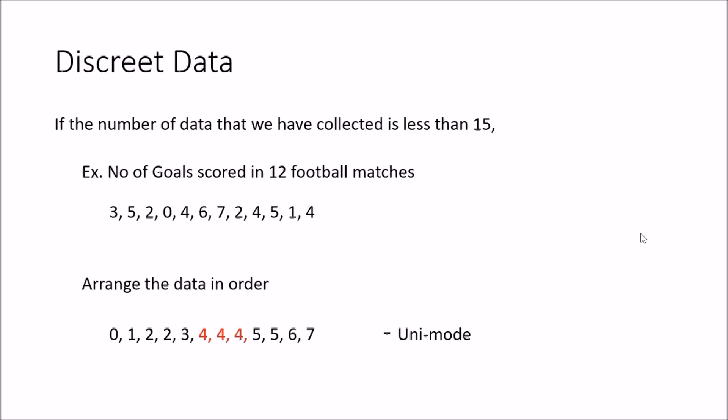First we look at the discrete dataset. As an example, we have the number of goals scored in 12 football matches. You have to arrange them in order, and once you do, you can see which numbers are repeated the most. In this case, the number four is repeated three times — highlighted here — meaning four goals were scored in three matches. As that is the highest frequency, the mode is four. This is a unimodal system, where you have only a single mode.